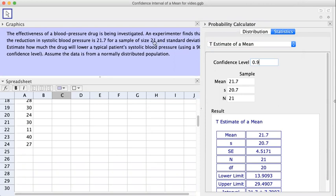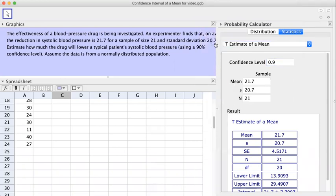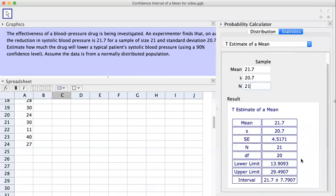And then over here we're going to enter the mean which is 21.7. The sample size is 21, so n equals 21. And the standard deviation over here they say 20.7, so we're going to put here the sample standard deviation.